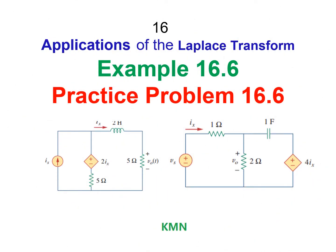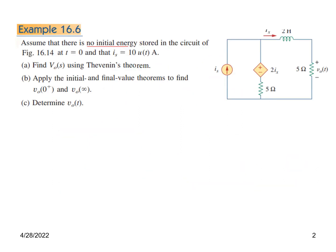This is another video on the application of Laplace transform. Here we will be discussing example 16.6 and we will solve practice problem 16.6. We assume that there is no initial energy stored in the circuit of figure 16.14 at t equals 0, and the current Is is given. We have to find three parameters.